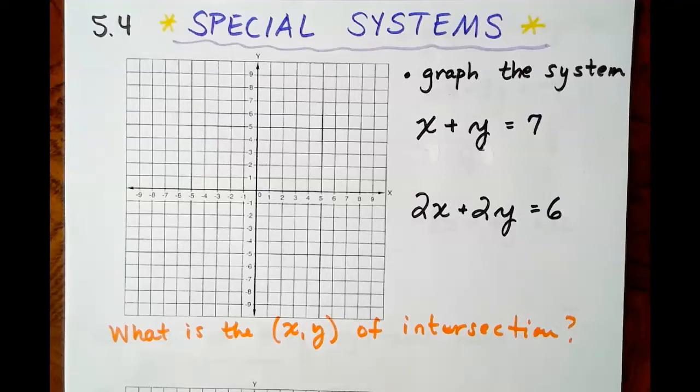In this section, we're going to be looking at some special systems. So far, we have solved systems by graphing, by substitution, and by elimination. These are special, and we're going to find out why in this first problem.